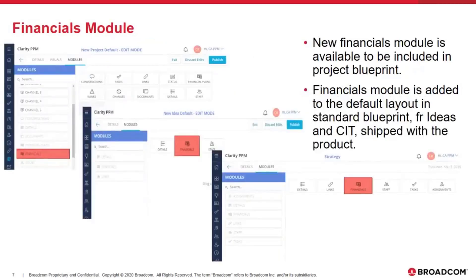So let's talk about the financial module itself. The new financial module is going to be available in the blueprint for all three objects: projects, ideas, and custom investment types. They are automatically added for the default blueprint for ideas and custom investment types — included in the view. As you can see on screen, when looking at the default idea, the financial module is already included as one of the tabs. The same goes for custom investment types.